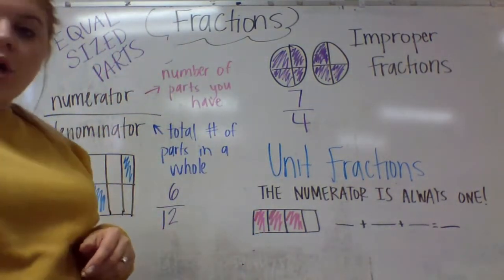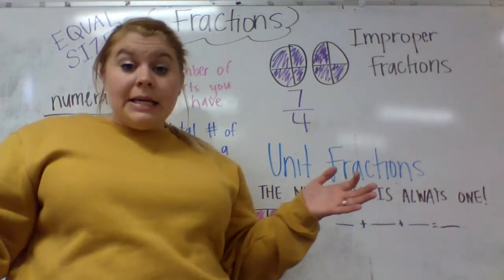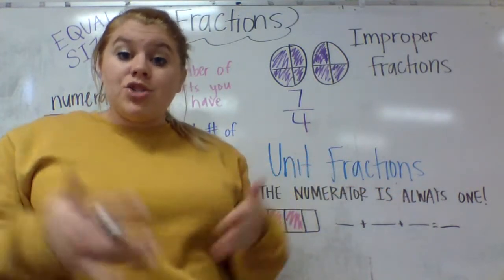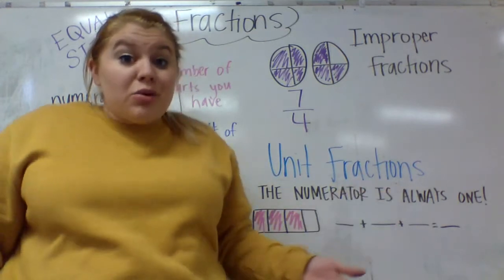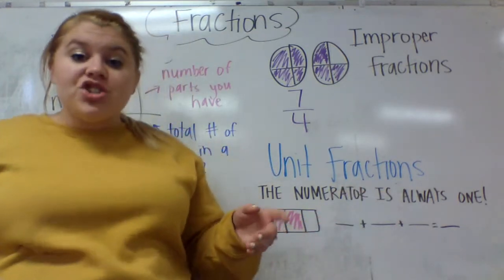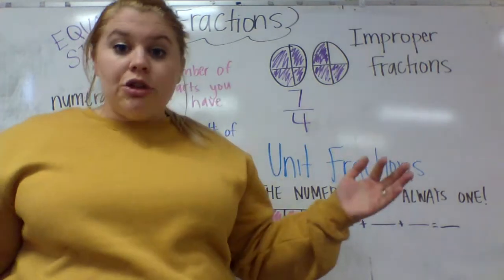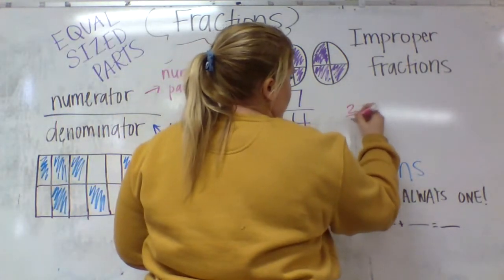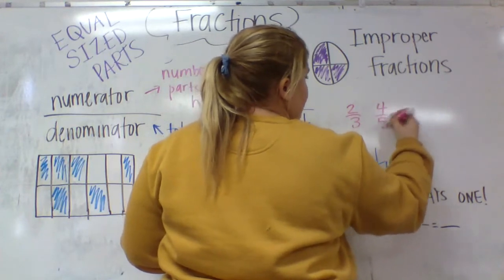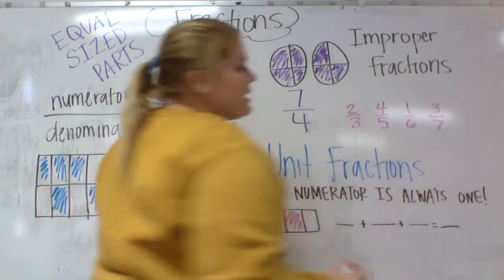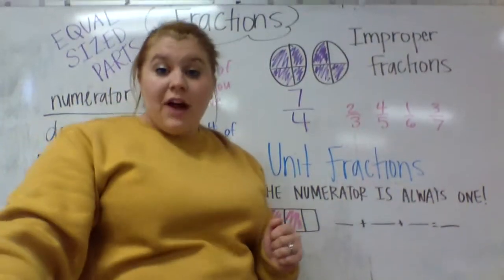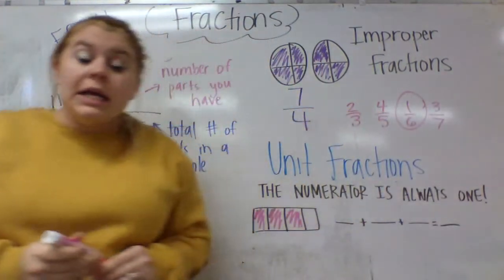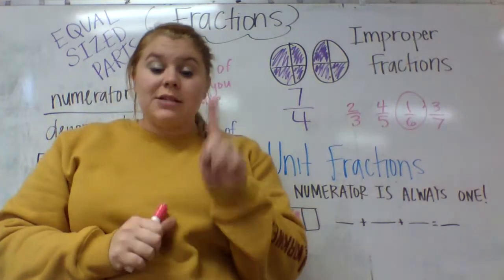The last thing we have to talk about are unit fractions. This is my fourth year teaching fourth grade fractions, and my kids always struggle with unit fractions — and they shouldn't, because unit fractions are really the easiest thing. A unit fraction just means that the numerator, your number up top, is always 1. So if I wrote out 2 thirds, 4 fifths, 1 sixth, 3 sevenths — the unit fraction would be the one with a 1 as the numerator.